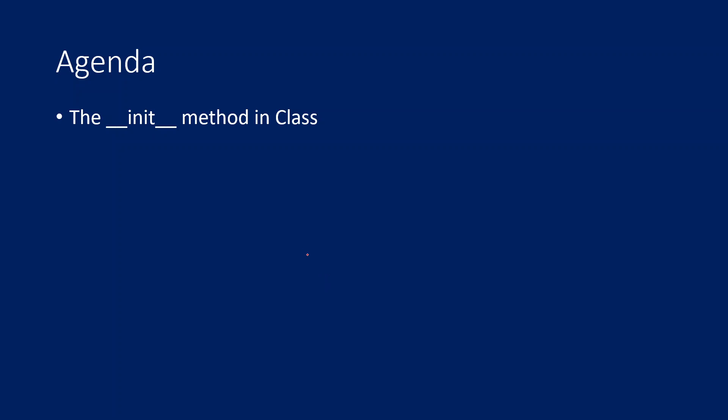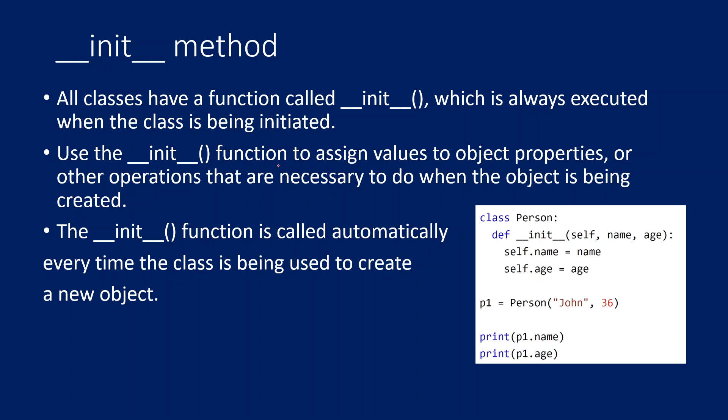So what is this __init__ method in a class? This is a special kind of method which is available within every class. Using this __init__ function you can actually assign values to your object properties when you are trying to create them. If what an object and class are is not clear to you, please watch my previous video first.